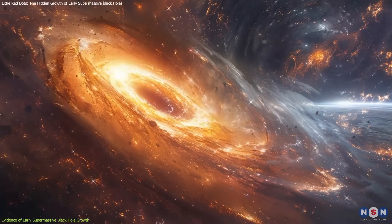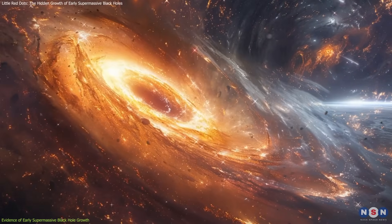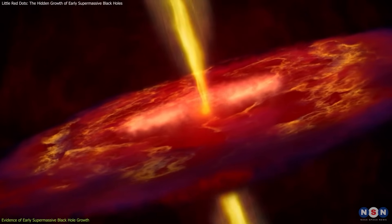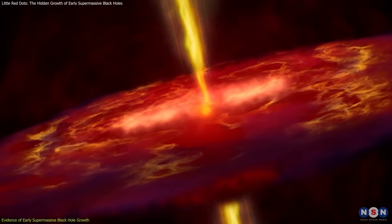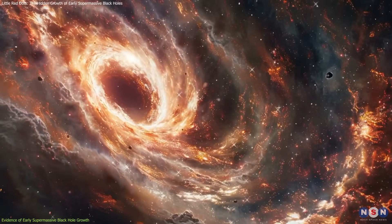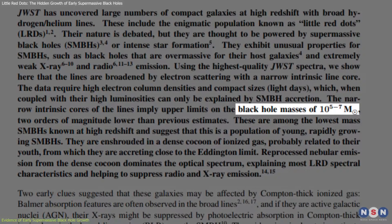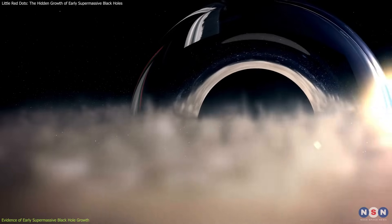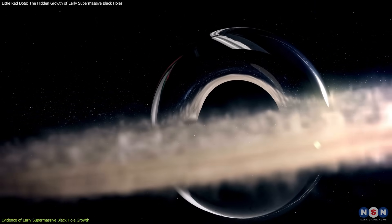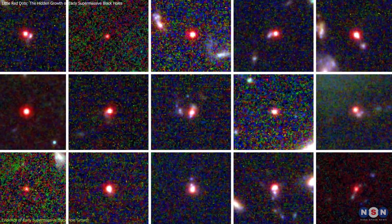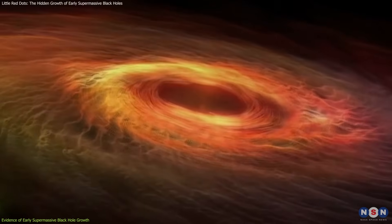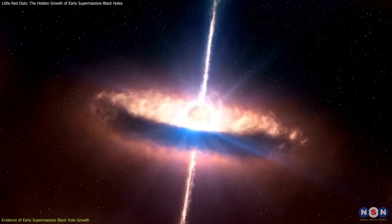The answer lies in their intense accretion rates. These black holes are growing at the highest possible speeds, producing extreme amounts of infrared radiation that pierces through the surrounding gas. The study also estimates that the black holes inside LRDs range from 10,000 to 1 million solar masses, much smaller than the fully grown supermassive black holes in modern galaxies. This strongly supports the idea that LRDs are an early stage of black hole evolution, transitioning toward larger AGNs.